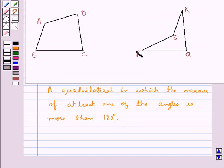Here the quadrilateral PQRS is a concave quadrilateral since its angle S has measure more than 180 degrees.